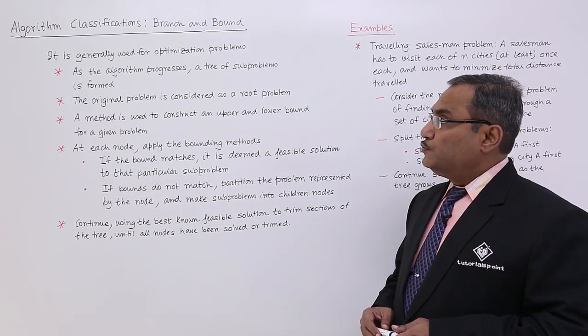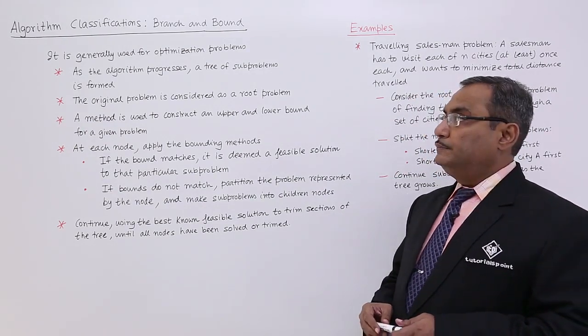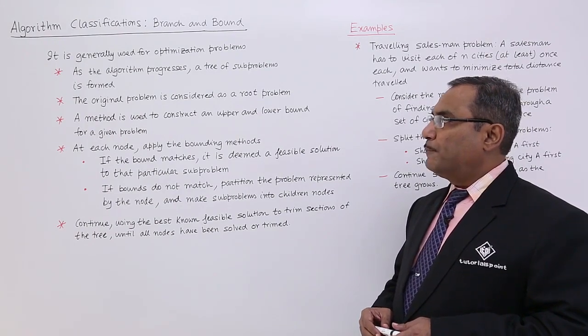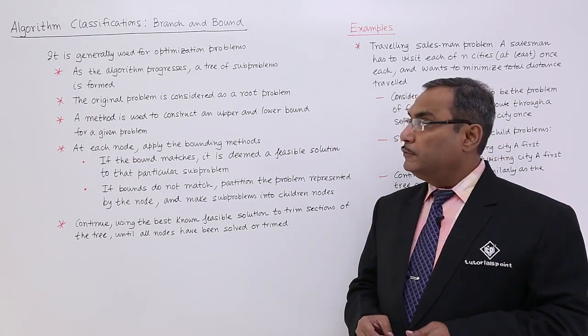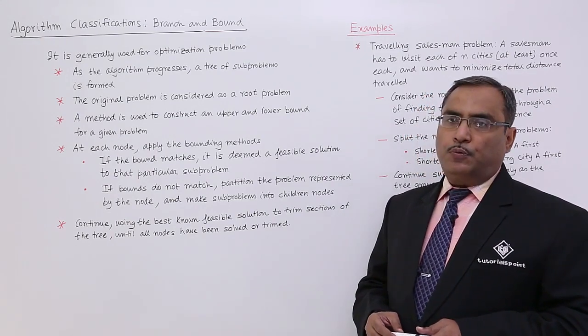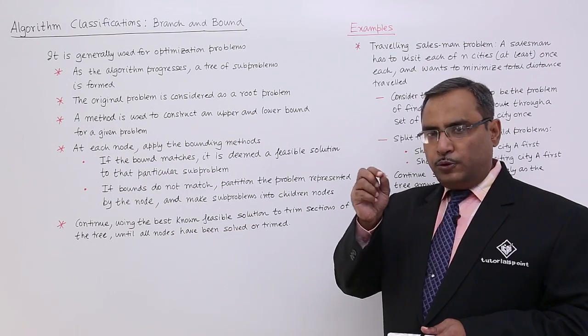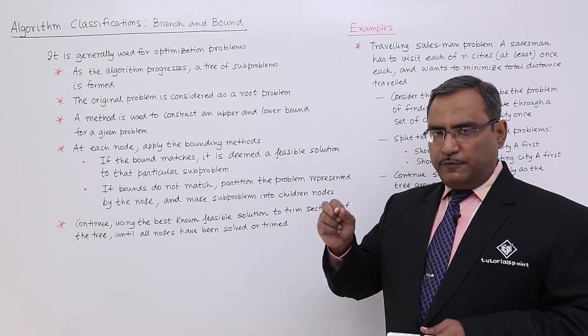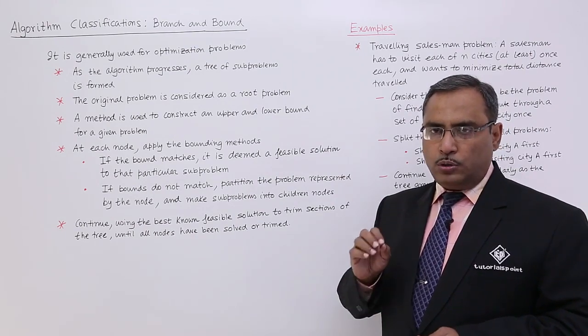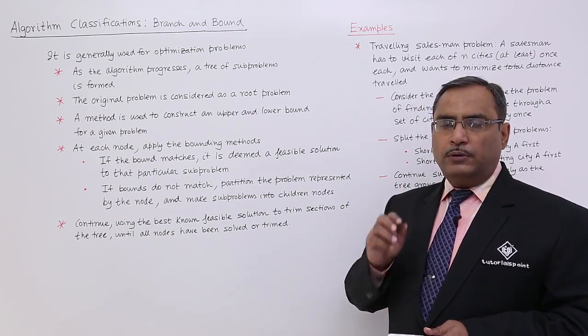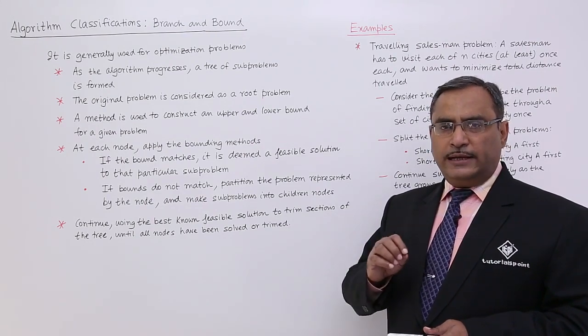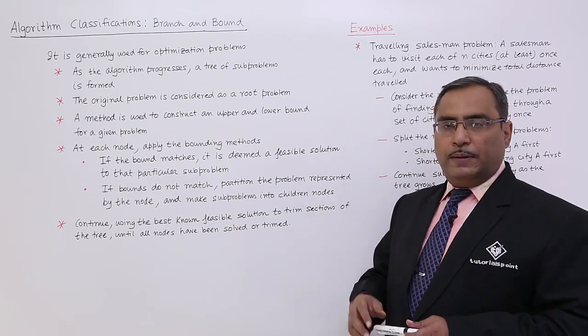It is generally used for optimization problems. As the algorithm progresses, a tree of sub-problems is formed. The original problem is considered as a root problem. From the root problem, we will have different sub-problems and they will become the children of that particular node. The first problem will be a root node and then we shall form a tree where the children will be the sub-problems.